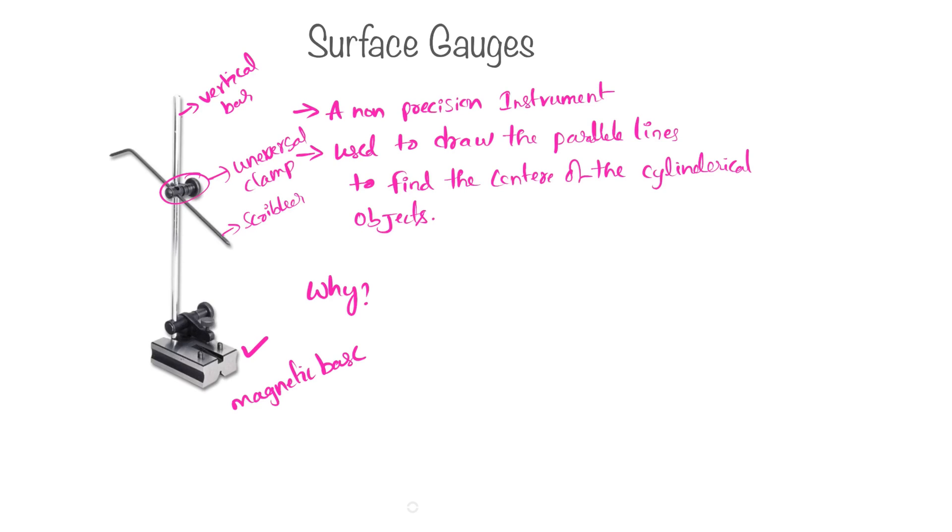And also this universal clamp will have a screw so that we can adjust this scribbler height on this vertical bar. And also there are some V grooves on this magnetic base so that we can place this surface gauge on the cylindrical objects as well.